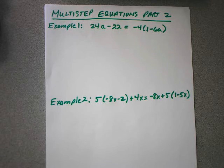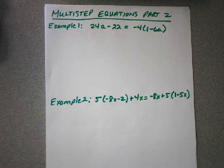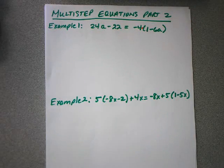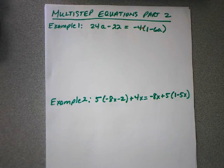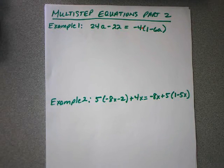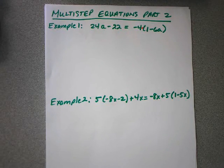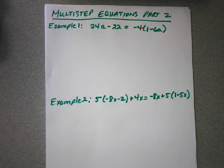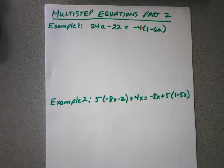Now remember that if you have things in parentheses, there is an invisible multiply sign, which means that you need to distribute whatever is in front to whatever is on the inside of the parentheses. We need to multiply whatever is on the outside to whatever is on the inside.